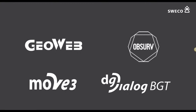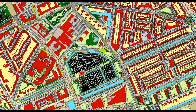Move 3 is our geodetic package focused on geodetic computations, and I work for DigiDialog BGT which is focused on the BGT — the base registration map of the Netherlands. In our software this is what the BGT looks like, specifically the surroundings of the Faculty of Architecture. The BGT is focused on digitizing all objects larger than 30 centimeters, and together they form a complete base map of the landscape of the Netherlands.